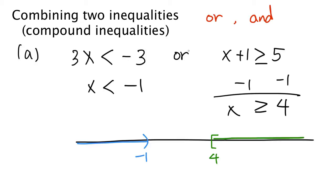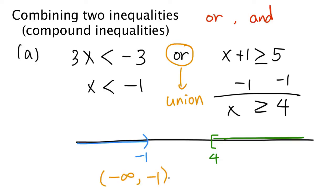Now, if two inequalities are combined with OR, we take the union of the two solution sets. The interval on the left-hand side is from negative infinity to negative 1, and we take the union with the interval on the right-hand side from 4 to infinity. So the two intervals together make up this solution set.